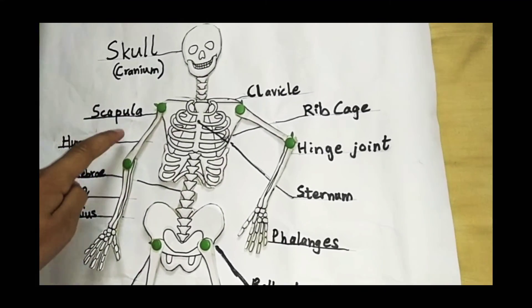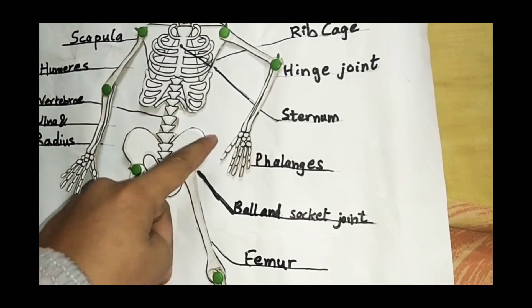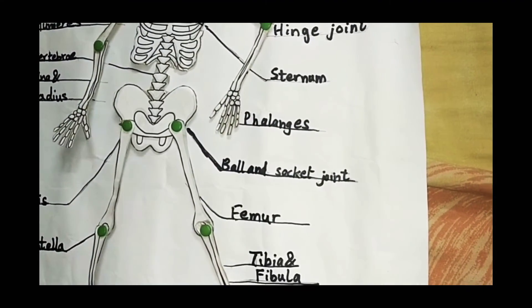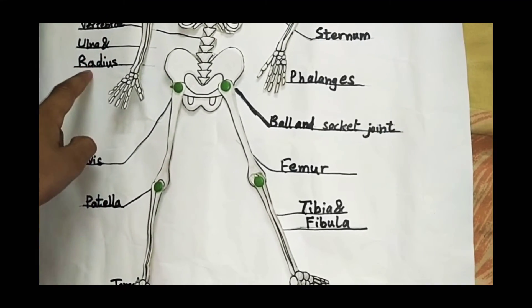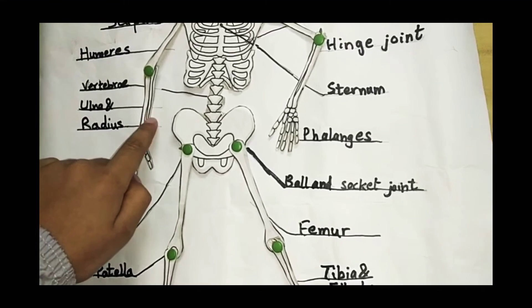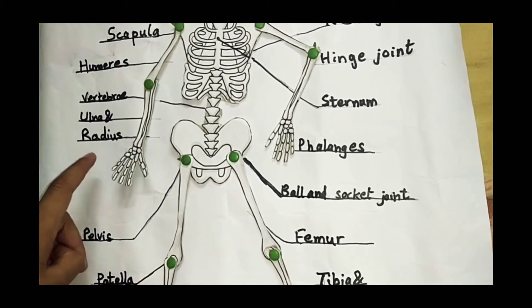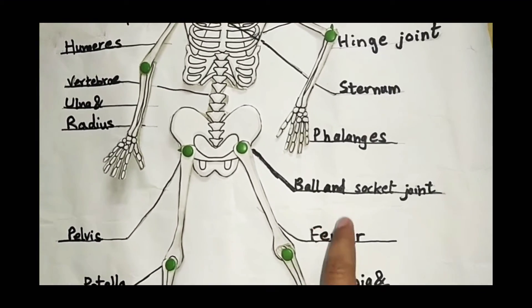This is the humerus bone, the upper arm bone. And these are phalanges, the fingers and even of the feet. These two bones, can you see there are two, they are called ulna and radius.